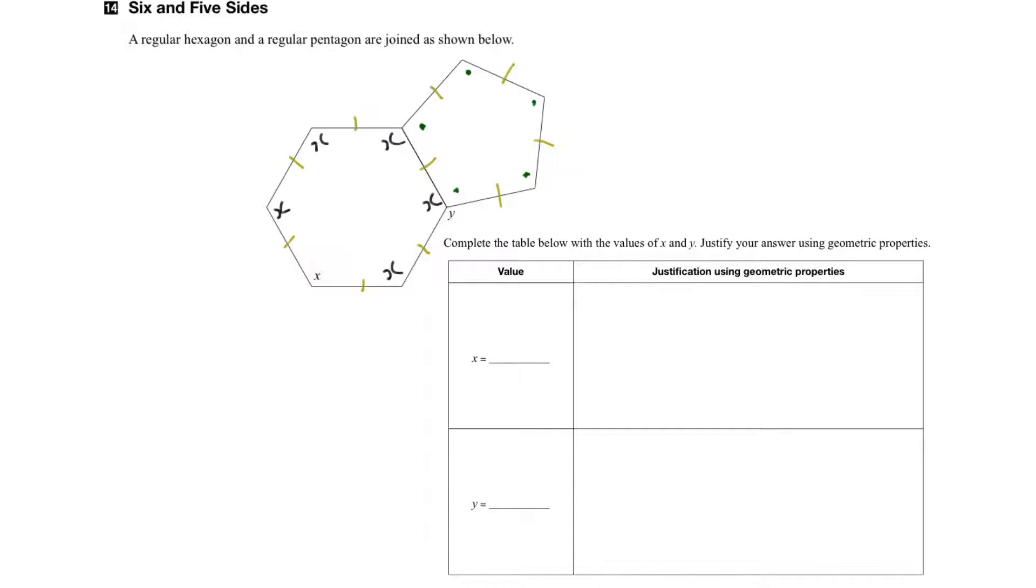So let's start by finding the value for x. There is a formula that we can use to find the sum of the interior angles of a regular shape, and it's given by this: 180 times n minus 2, where n equals the number of sides.